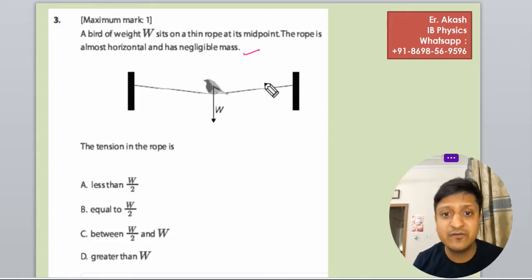For this question, first of all, we have to make the free body diagram. The free body diagram will be like this. Weight will be downwards and tension will be at the strings.